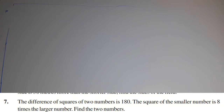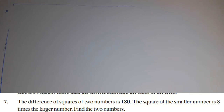Hi, my dear friends. In this video we are going to learn quadratic equations, exercise number 3, question number 7. Here is a very interesting question: the difference of squares of two numbers is 180, and the square of the smaller number is 8 times the larger number. Find out the two numbers.